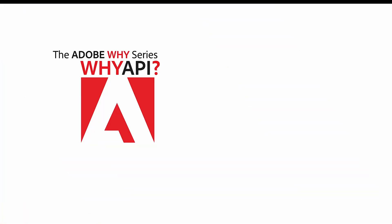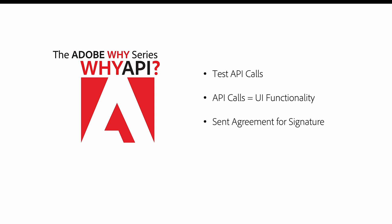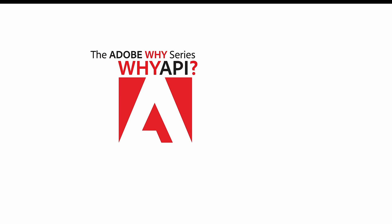In summary, in this video I showed you how to test the Acrobat Sign APIs from within the Acrobat Sign UI. You also saw those API calls as they compared to the functionality in the Acrobat Sign UI, and using the API I sent an agreement out for signature. Lastly, I showed you where you can get a free developer account so you can get started testing our APIs — so get in there and play around, and you'll see why API!